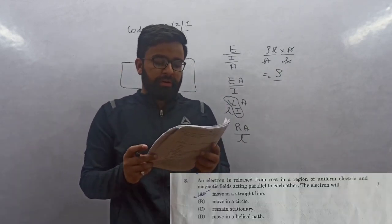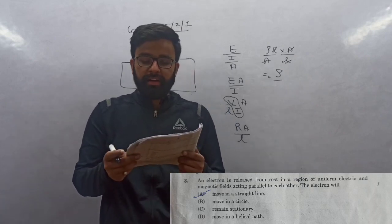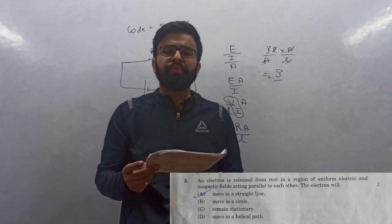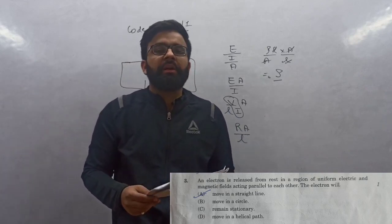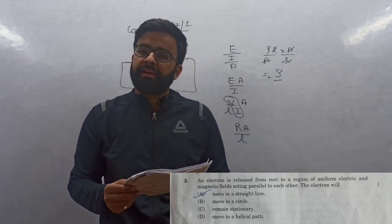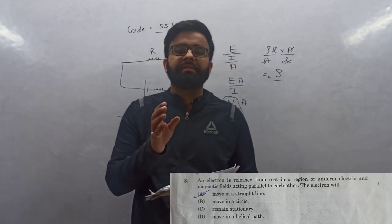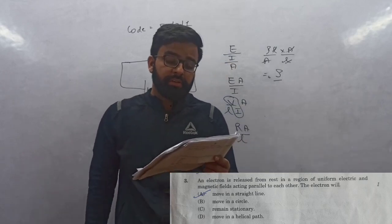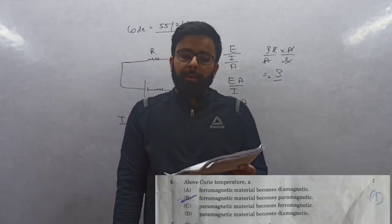Question 3: An electron is released from rest in a region of uniform electric and magnetic field acting parallel to each other. The electron will move in a straight line. Why? Because electric field applies force along straight line. As it is parallel to magnetic field, force due to magnetic field will be zero. This gives motion in a straight line.